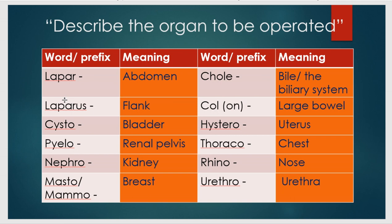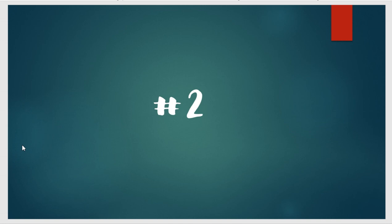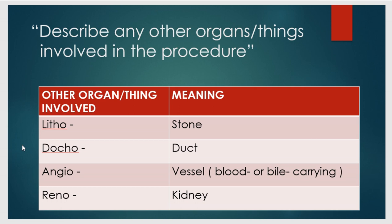RHINO means related to the nose, and URETHRO is related to the urethra. So in this first point, we must describe the organ to be operated. Moving to the second point: describing any other organs or things involved in the procedure. For example, LITHO means something related to a stone. If a stone is present in the kidney and a procedure is being done for it, we combine NEPHRO and LITHO — nephrolithotomy. NEPHRO means kidney, LITHO means stone.